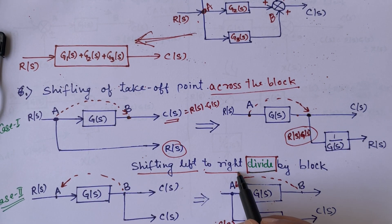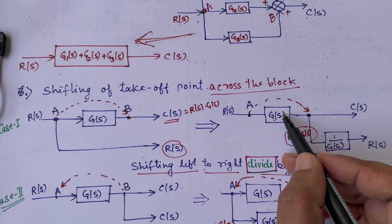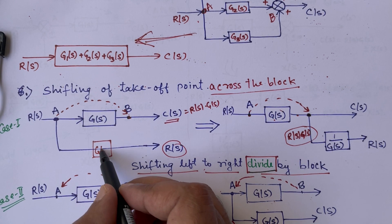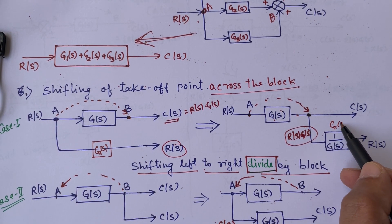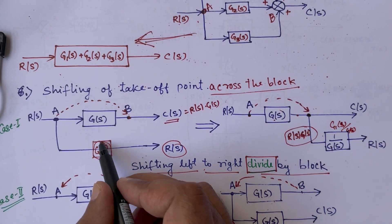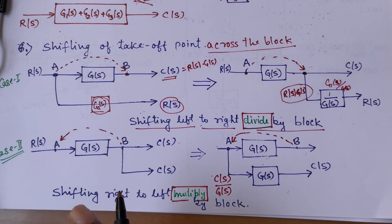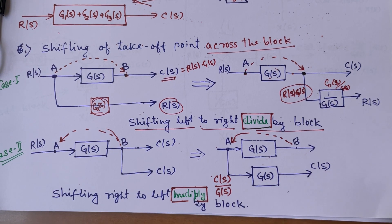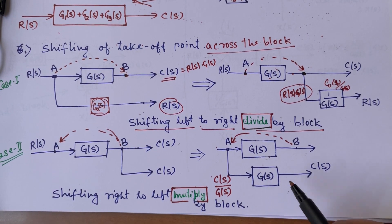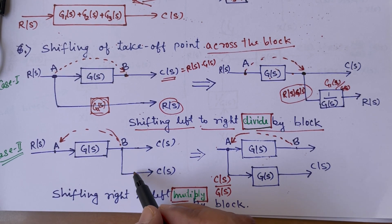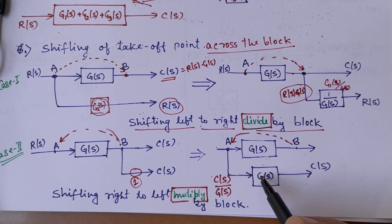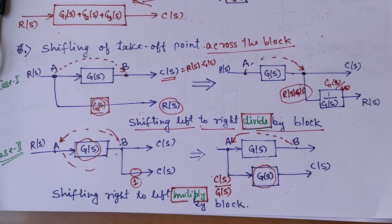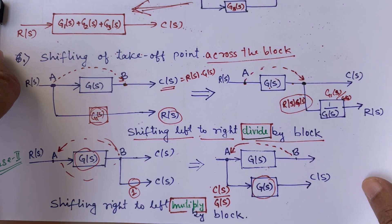If we have some block G1(s) on the branch, it becomes G1(s)/G(s) after shifting. Conversely, when shifting a takeoff point from right to left (from B to A), it is the opposite: we multiply by G(s). Since the original wire has a transfer function of 1, we multiply by G(s) and add that block.